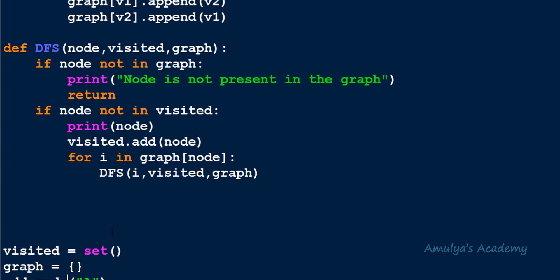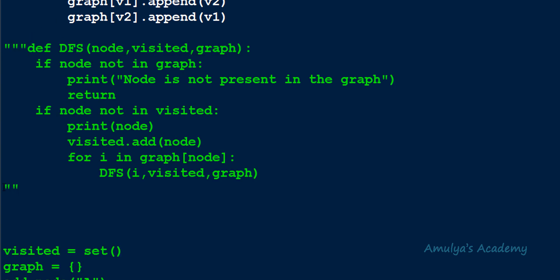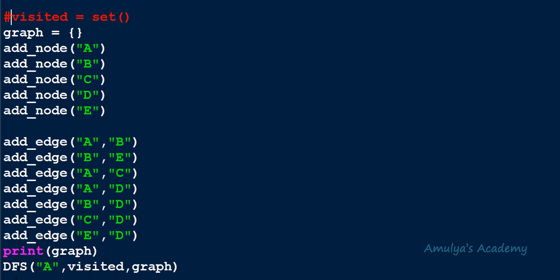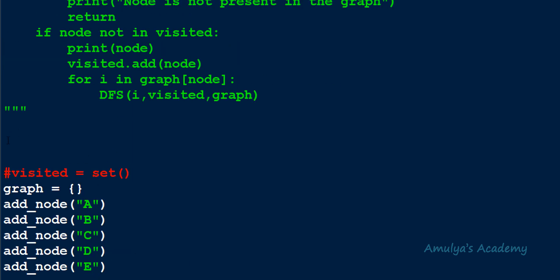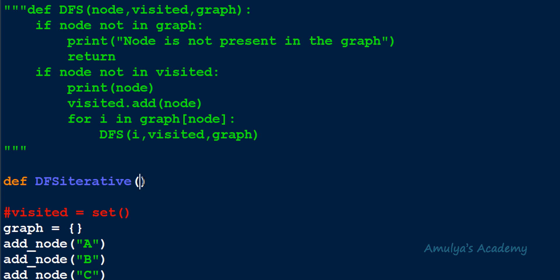Today we want to write the DFS function using an iterative approach. For that, I will first comment out the recursive DFS function, as well as the visited set and the function call related to it. Next, we need to define an iterative function for the DFS algorithm, so I'll write `def DFS_iterative` and mention the parameters.